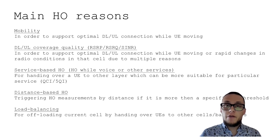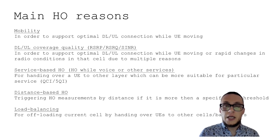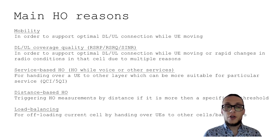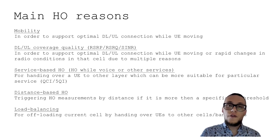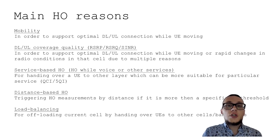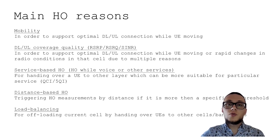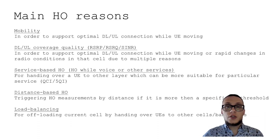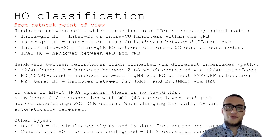Another very common handover reason is load balancing. This may be a feature in different networks and in 5G it is also very common. It may be performed for offloading reasons — to offload current cells based on different metrics such as PRB utilization, number of active users, or number of RRC-connected users. Based on that decision, if a current cell is overloaded, some users may be handed over to other cells, other frequency bands, or even other technologies — for example, from an overloaded 5G cell to 4G.